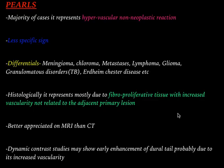The most important points to remember in the dural tail sign: in the majority of cases it represents a hypervascular non-neoplastic reaction. It is a less specific sign, and differentials include a big list — meningioma, chloroma, metastasis, lymphoma, glioma, and granulomatous disorders. Especially in India, think of TB.